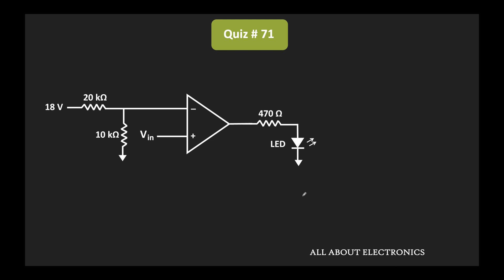So if you look at this circuit, it is a comparator circuit. For this LED to turn on, the output voltage of this op-amp should be positive.